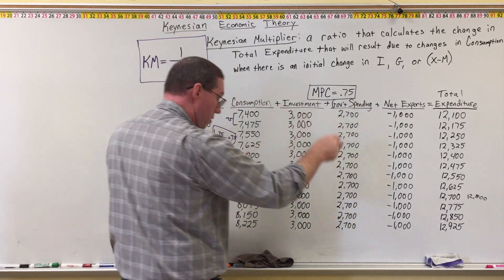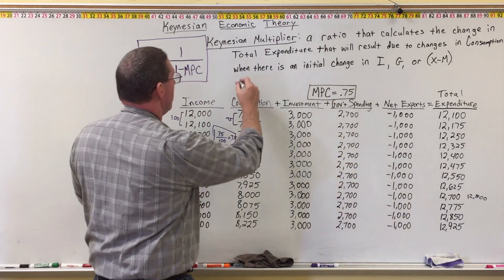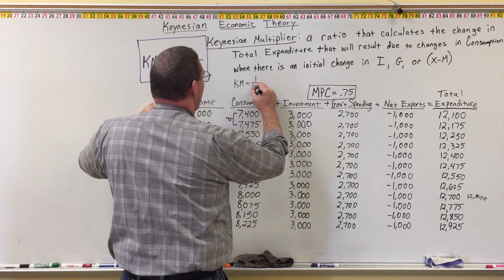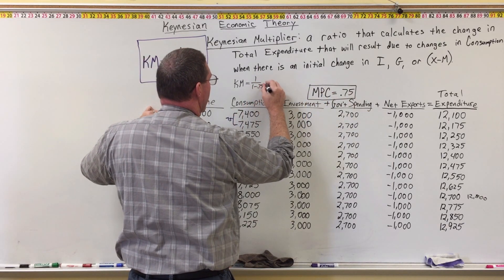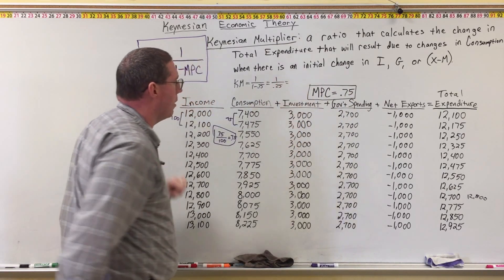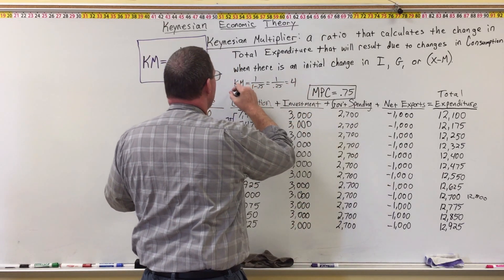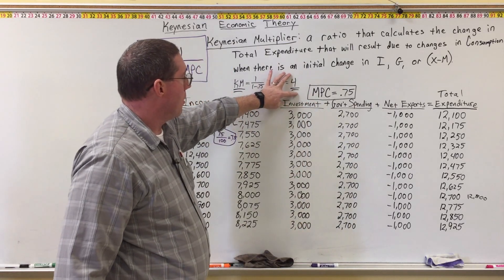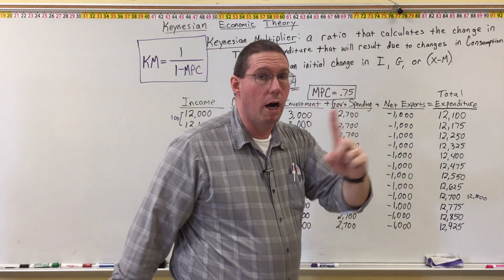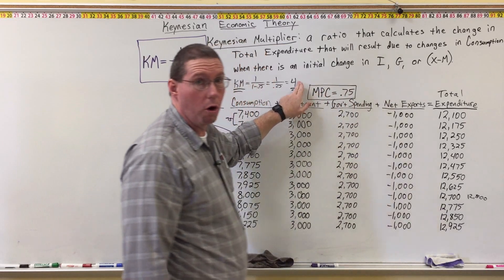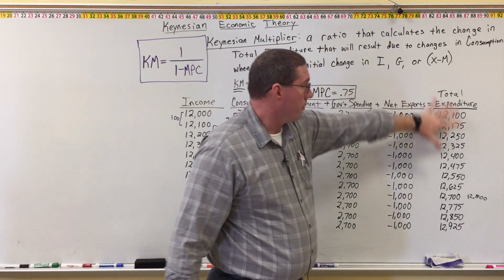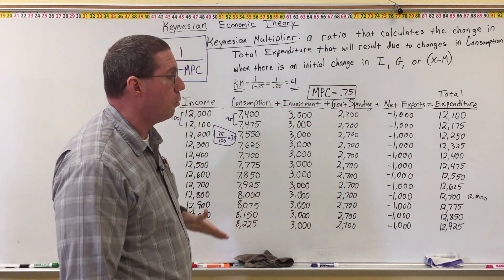To calculate the Keynesian Multiplier for this economy: Km equals 1 divided by 1 minus the marginal propensity to consume, which is 0.75. So we have 1 divided by 0.25, and 1 divided by 0.25 is 4. Therefore, the Keynesian Multiplier for this economy is 4. If you were to increase government spending by 100, you multiply that 100 by 4, and that tells you the overall effect on total expenditure — the overall effect on the new equilibrium GDP.